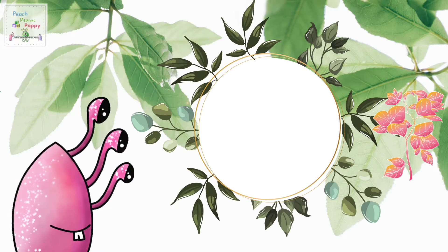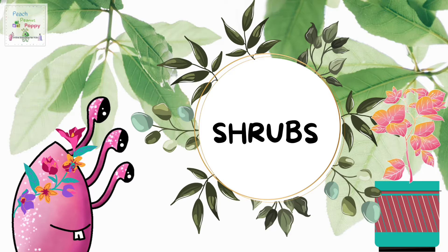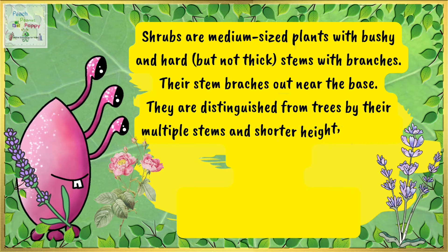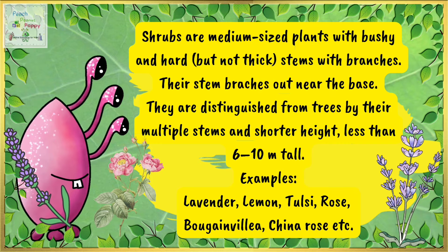Moving on to the next type of plant — shrubs. Shrubs are medium sized plants with bushy and hard but not thick stems with branches. Their stem branches out near the base. They are distinguished from trees by their multiple stems and shorter height, which is less than 6 to 10 meters tall. For example, lavender, lemon, tulsi, rose, bougainvillea, china rose, etc.